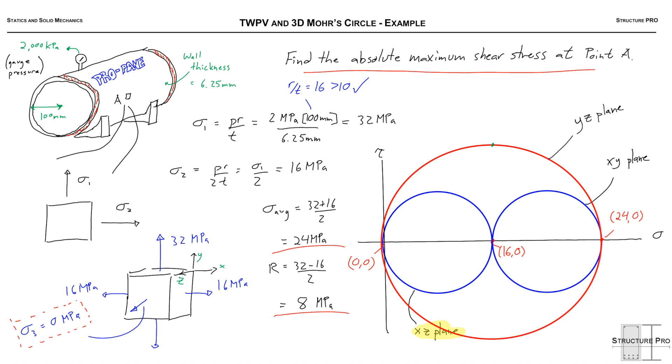I just drew all those circles really quick while you weren't looking, so let's digest them. Firstly, the XY plane, and you can see I drew the coordinates on the top right of that little cube, the Y, X, and Z. So the XY plane is the one that we solved for with the sigma average of 24 and the R of 8.